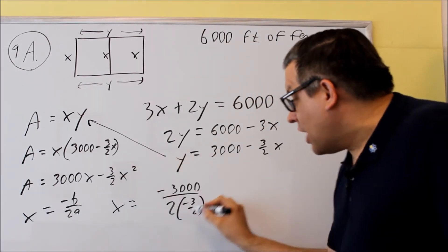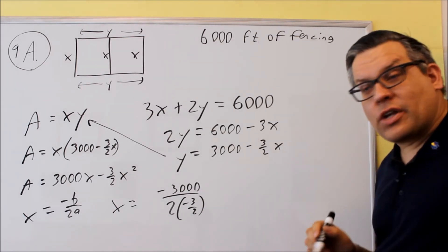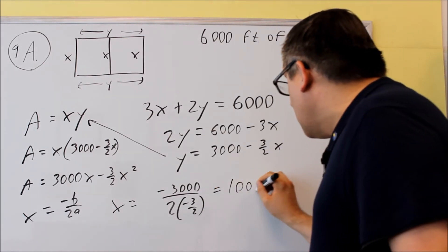We're going to do negative 3,000 divided by 2 times negative 3 halves. Make sure you use the negative with that as well. The negatives are going to cancel, the 2's are going to cancel, and you get 3,000 over 3 which will give you 1,000.